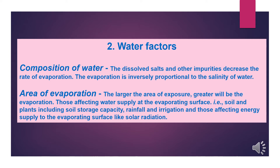The second water factor is area of evaporation — the larger the area of exposure, the greater the evaporation. Other factors include those affecting water supply at the evaporating surface, like soil storage capacity, rainfall, and irrigation, and those affecting energy supply to the evaporating surface, like solar radiation.